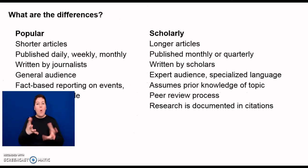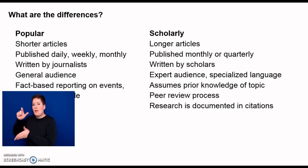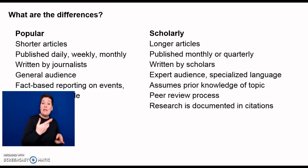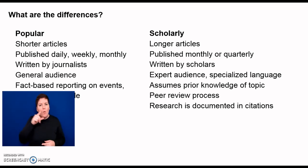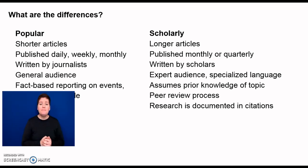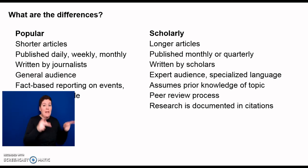Here is a chart showing the differences between popular and scholarly articles. Popular articles are typically shorter, published daily, weekly, and monthly, written by journalists, and intended for a general audience. They are fact-based reporting on events, places, and people, and typically written in the author's opinion.